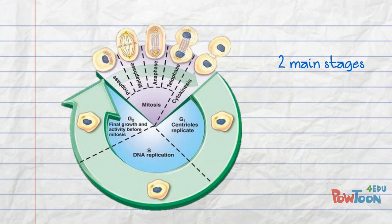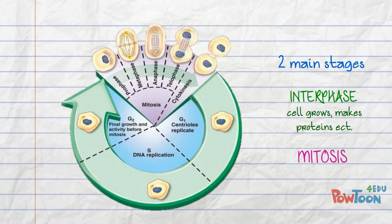There are two main sections of the cell cycle: there's interphase, seen in green, which is where the cell spends most of its life, and then there's mitosis, seen in pink, where the cell divides.